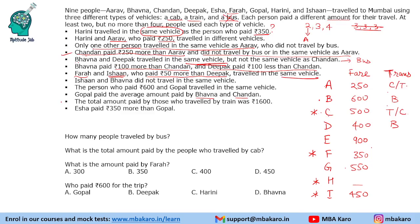So Chandan's vehicle has four travellers: Chandan, Farah, Harini, and Ishan. And bus will have three travellers: Bhavana, Deepak, and one more. The person who paid 600 — that is Bhavana — and Gopal travelled in the same vehicle, so Gopal is also travelling by bus. That gives us exactly three people by bus.